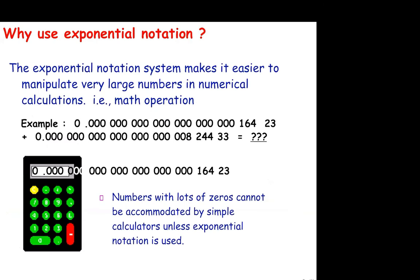Suppose we have a question like: what is the mass of a single copper atom? That number is very, very small. Again, the zeros are nothing more than placeholders; the numbers that are significant are at the end. So why not express that number in some notation so you still have that information but don't have to carry this excess luggage? That is why we use exponential notation. You can see that this number is much, much less than 1, so it's going to have a huge negative exponent.